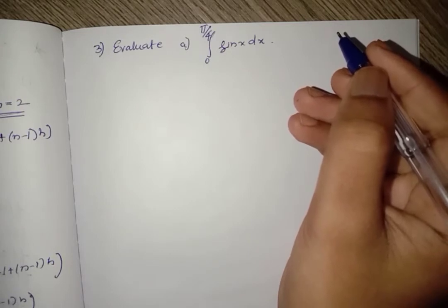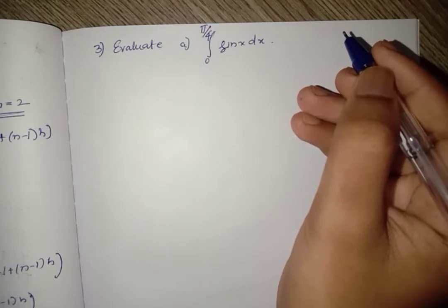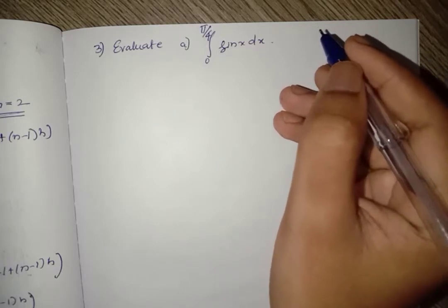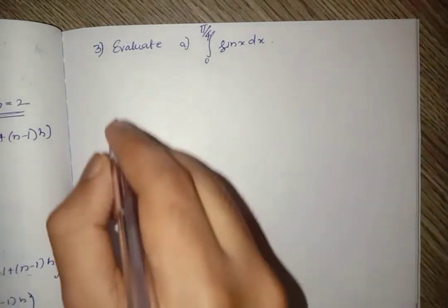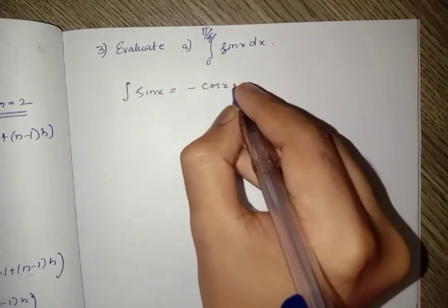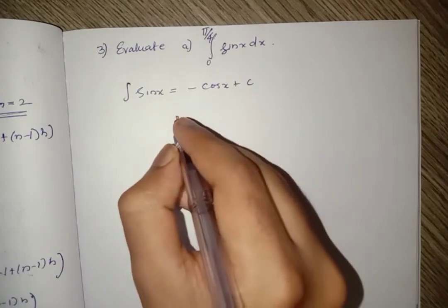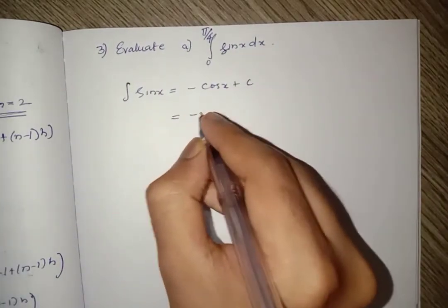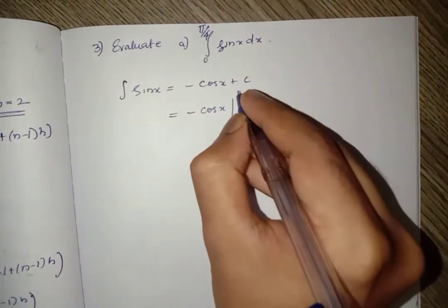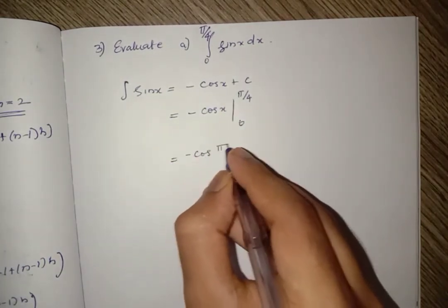Now the third question: evaluate integral from 0 to π/4 of sin(x) dx. We use the fundamental theorem of integral calculus, which is much simpler. The integral of sin(x) is -cos(x) + c. So we evaluate [-cos(x)] from 0 to π/4, which gives -cos(π/4) - (-cos(0)) = -cos(π/4) + cos(0).